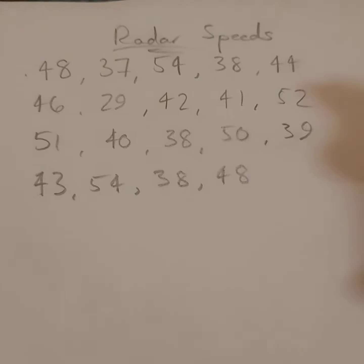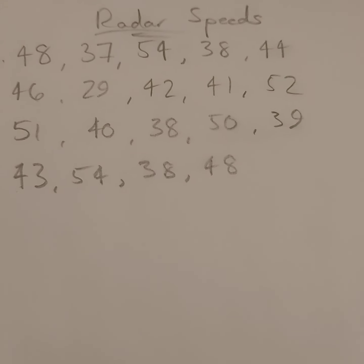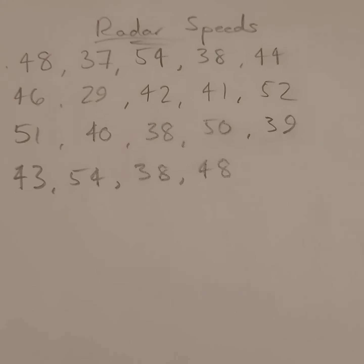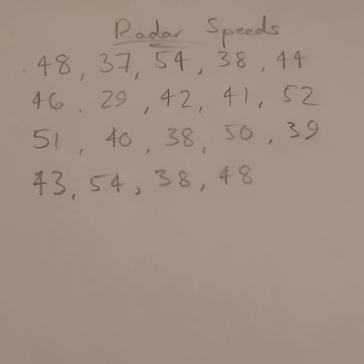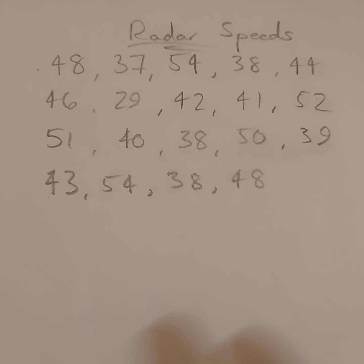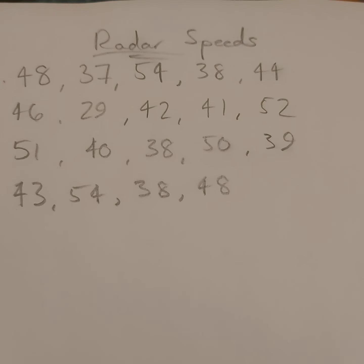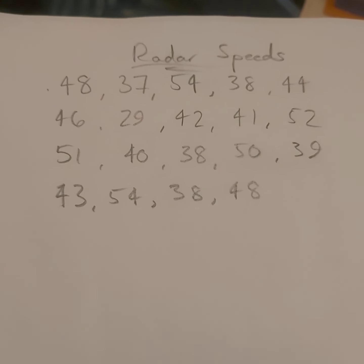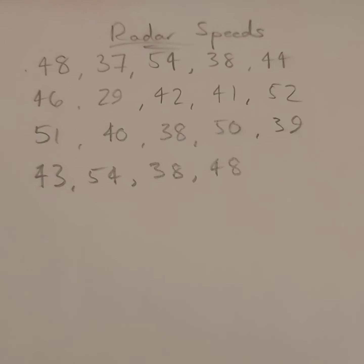This data set doesn't have that many numbers, but if we were dealing with a much larger set, the stem and leaf plot would make it easier to organize. This set of numbers deals with radar speeds that were taken — you saw this example earlier in class — recorded in a school zone. So we're trying to look at what trends we notice with the speeds measured that day.